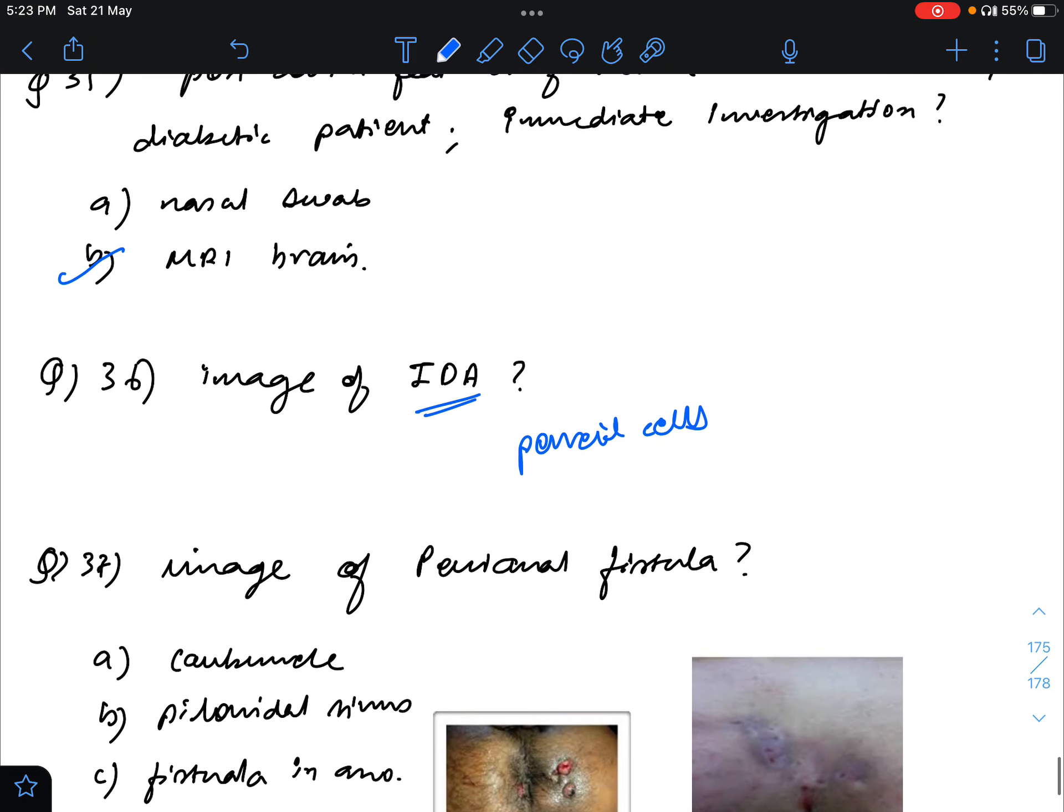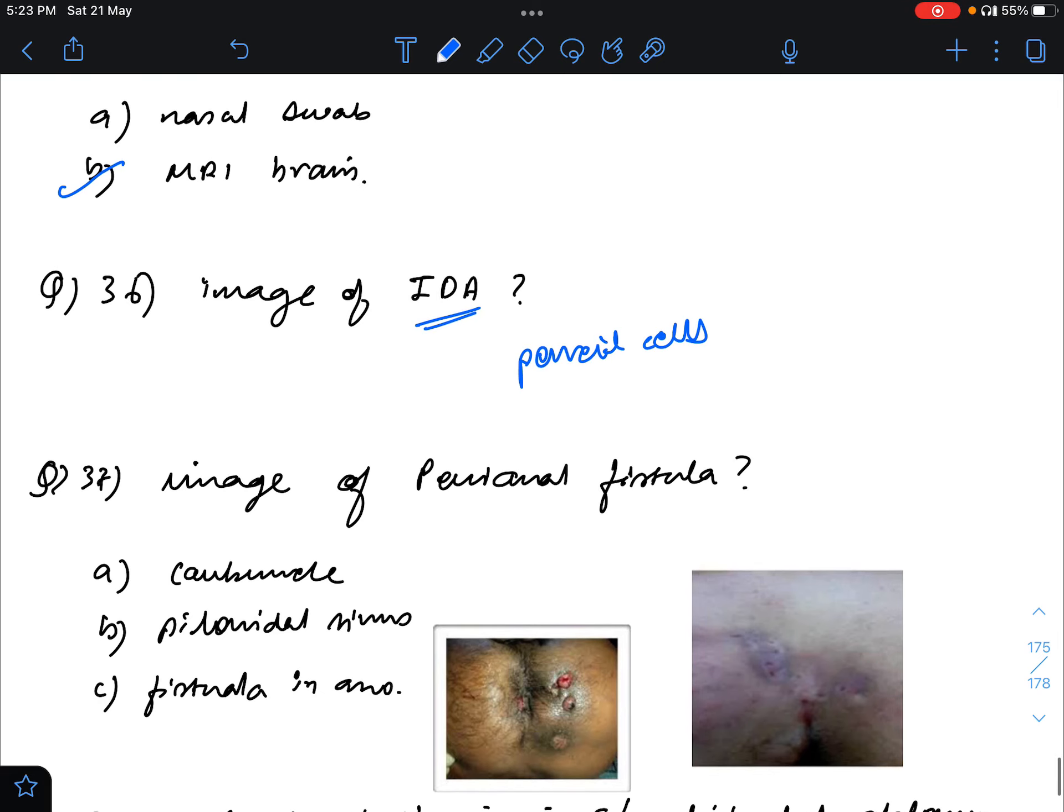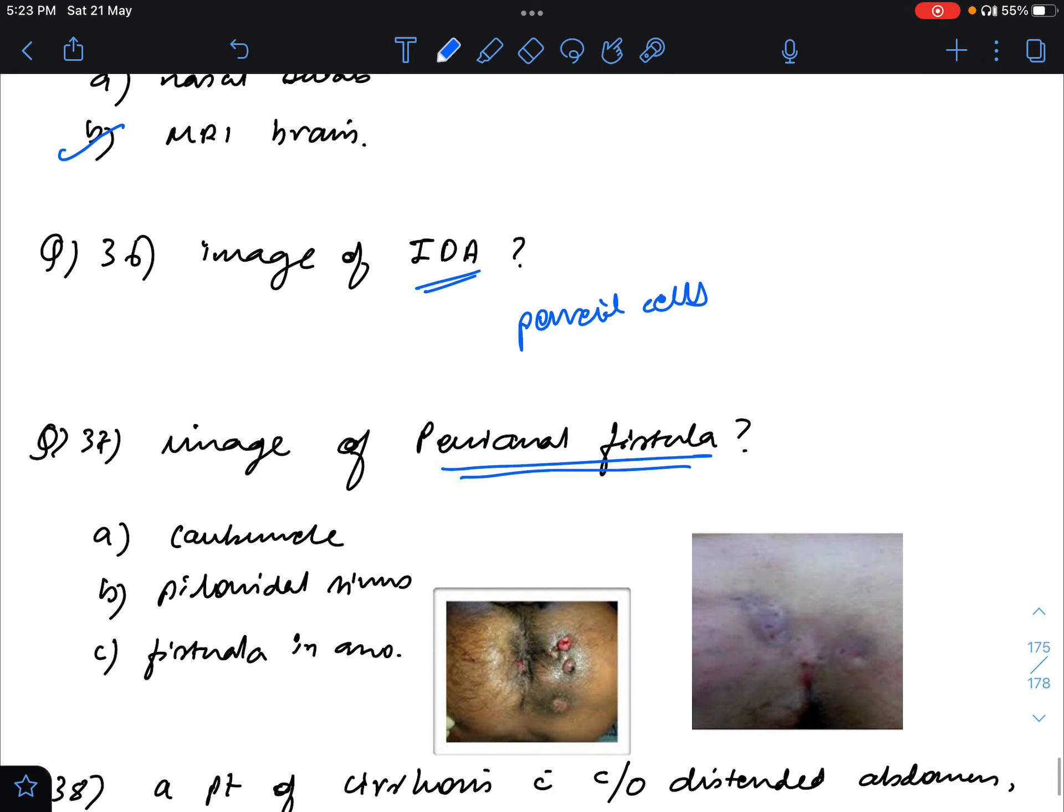This question, a lot of people are giving different answers, they think it's a controversy, but I think the answer will be perianal pustula. You can look on Google, I've done the same thing. Multiple pilonidal sinus, many people are saying pilonidal sinus. Multiple pilonidal sinus looks like this, but fistula in ano, which is one of the options, multiple fistula in ano looks like this. So this should be the answer I think.